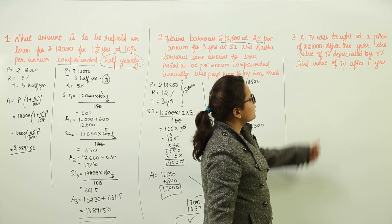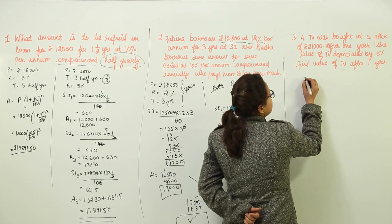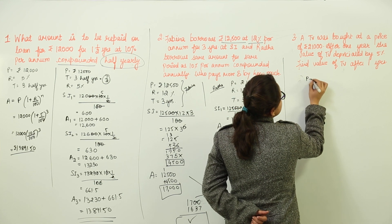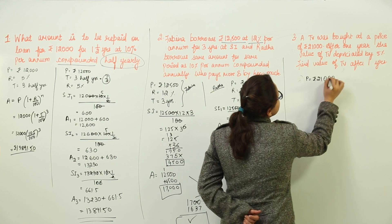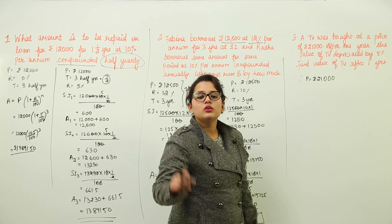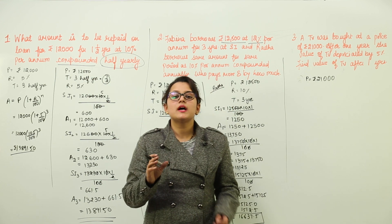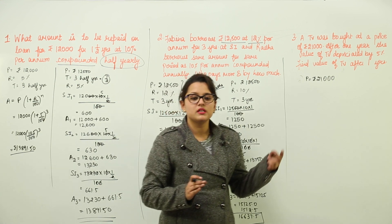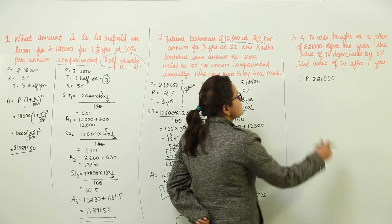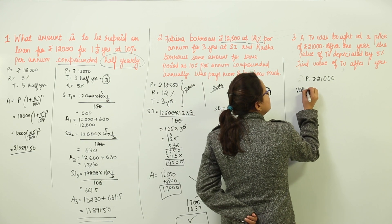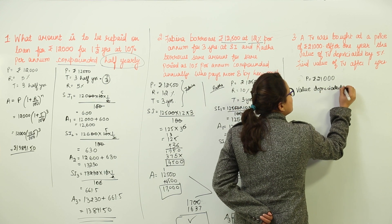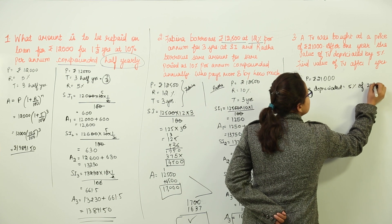The third question says: a TV was bought at a price of Rs. 21,000. So the cost price or principal is Rs. 21,000. After 1 year, the value of the TV depreciated by 5%. Depreciation means the value is getting reduced by 5% after 1 year. Find the value of the TV after 1 year.